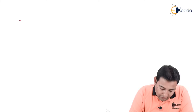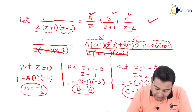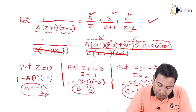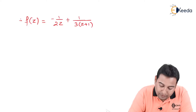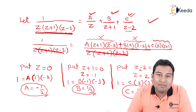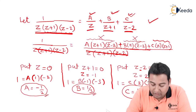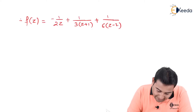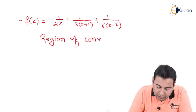Now substituting A=-1/2, B=1/3, C=1/6, we get f(z) = -1/(2z) + 1/(3(z+1)) + 1/(6(z-2)). The advantage of partial fractions is that it separates the three factors — originally in multiplication — into separate terms with plus or minus, so we can expand each individually.